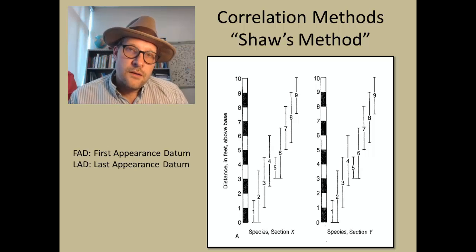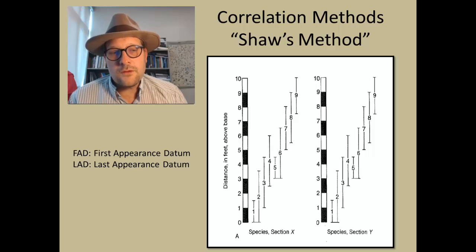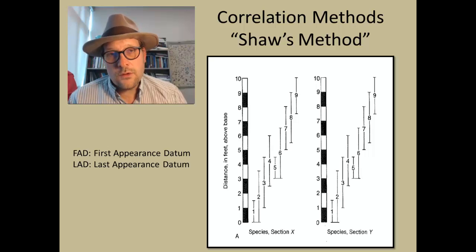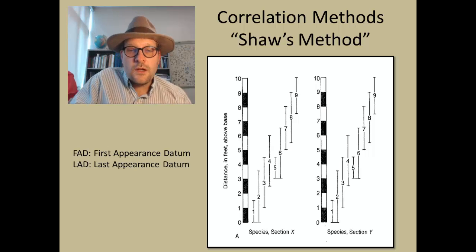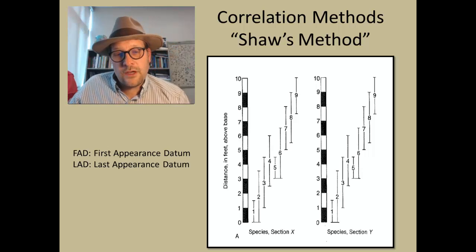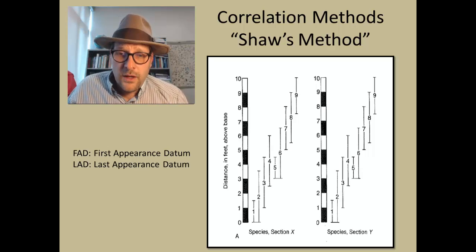There are two terms to define: FAD, the first appearance datum, and LAD, the last appearance datum. FAD and LAD could be globally defined as a chronozone, or they could be a biozone within a single section. You will often see those abbreviations when discussing biostratigraphic ranges. So here we have two sections — maybe one in Europe and one in Utah — and we want to compare them. We have our ranges of different species, nine species in this example.